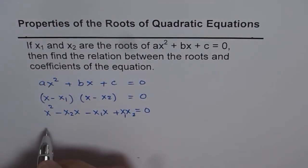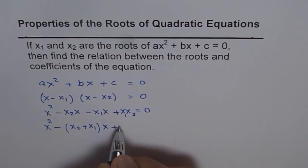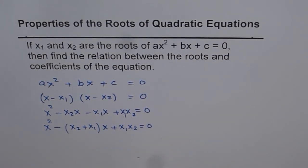Now, we can factor x, then we get x squared minus (x2 plus x1) when we factor x, and here we have the product of the two roots x1x2 equals 0.